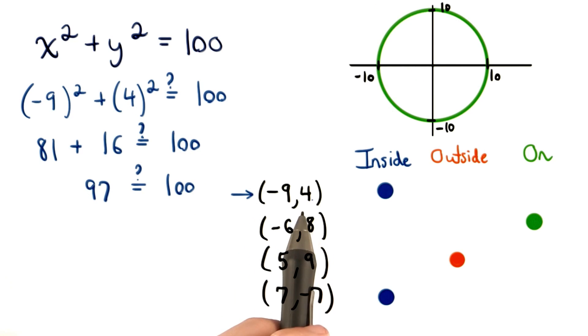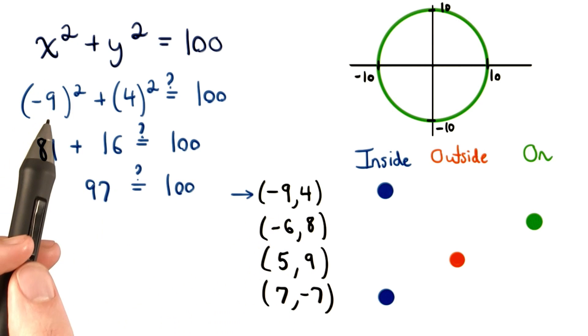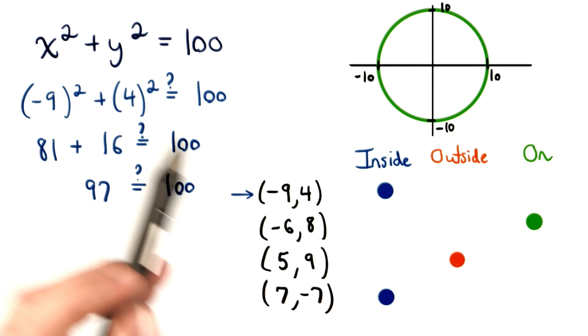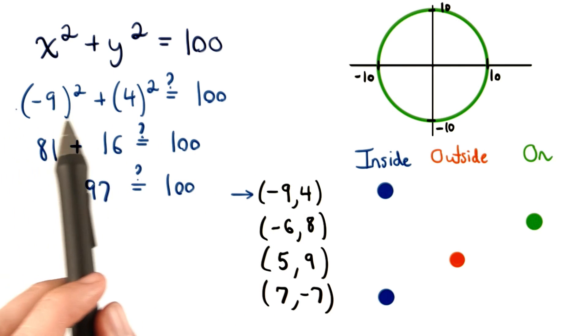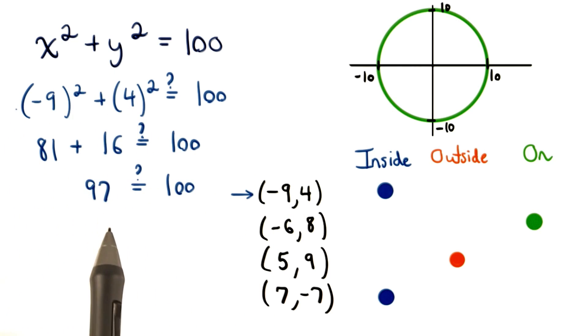For this point, it turns out it will be inside. When we check the point (-9, 4), we'll plug in x with the value of negative 9, and we'll substitute the value of y with 4. Simplifying the left-hand side of our equation, we'll get 97.